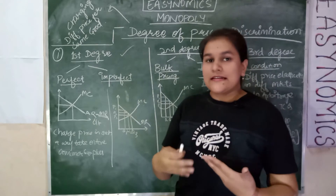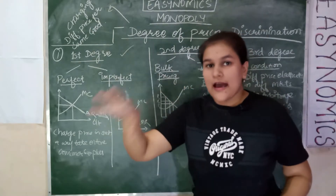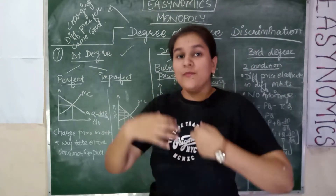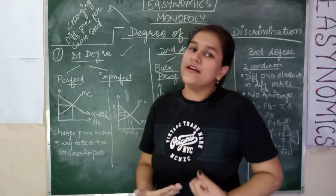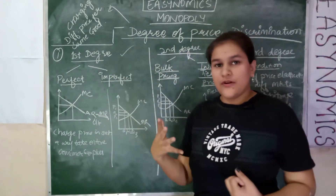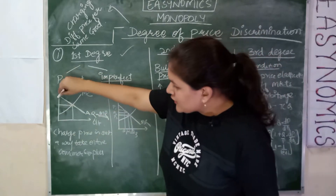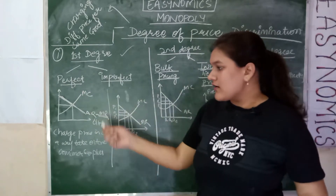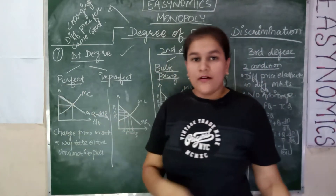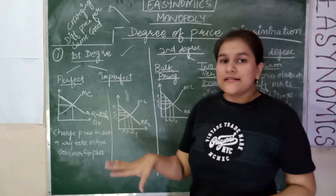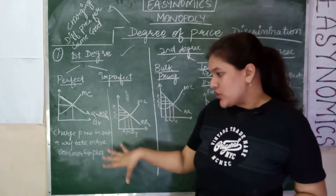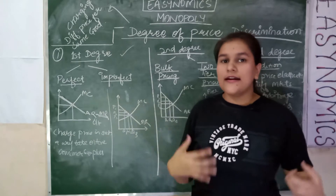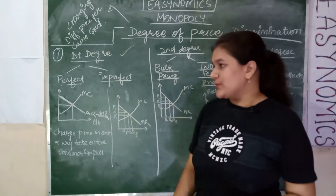What happens in this case is that your AR curve actually becomes your marginal revenue curve. This means that we extract the entire consumer surplus from the consumer. Consumer surplus means the consumer's maximum willingness to pay — we charge the price of every unit of the commodity differently. So your AR curve coincides with your MR curve and there is no deadweight loss in this case, but this is a very idealistic scenario that does not exist in the real economy. The monopolist charges prices such that the entire consumer surplus is extracted.